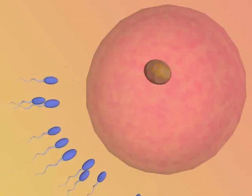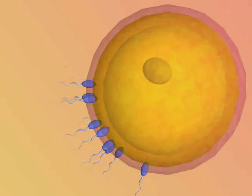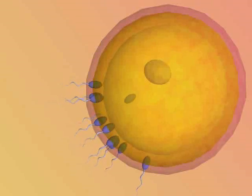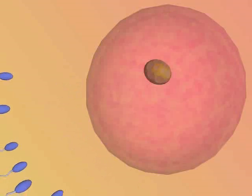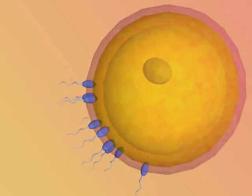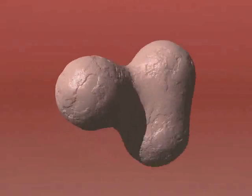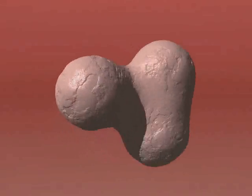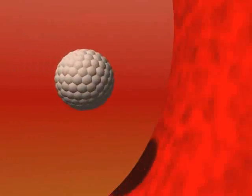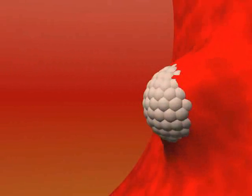Within a few hours after fertilization — that is, after the nucleus of the sperm has united with the nucleus of the egg — the result of the union, the zygote, begins a process of internal division. First it divides into two cells, then four, eight, sixteen, and so on, doubling the number with each new division. This process of cell division, or cleavage, in the zygote is called segmentation. It transforms the zygote into a cluster of cells called the morula, which, seen through a microscope, resembles a mulberry. The morula slowly moves down the fallopian tube toward the uterus, where it arrives after about three days.